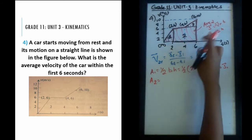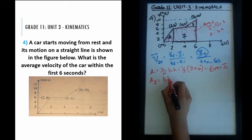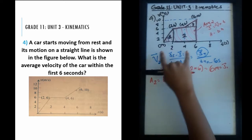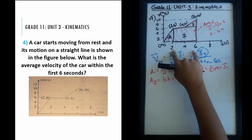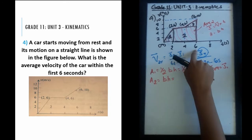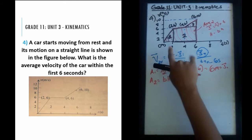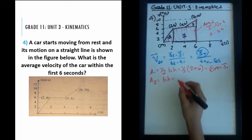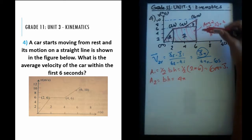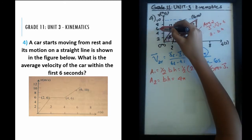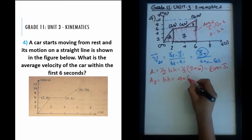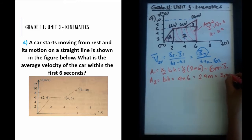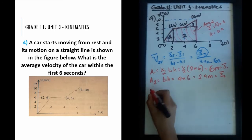For the second area, it's a rectangle, so the area is base times height. The base is from two to six seconds — not zero to six, but six minus two — giving a length of four seconds. The height is still six meters per second. So four times six equals 24 meters. That's our second displacement.